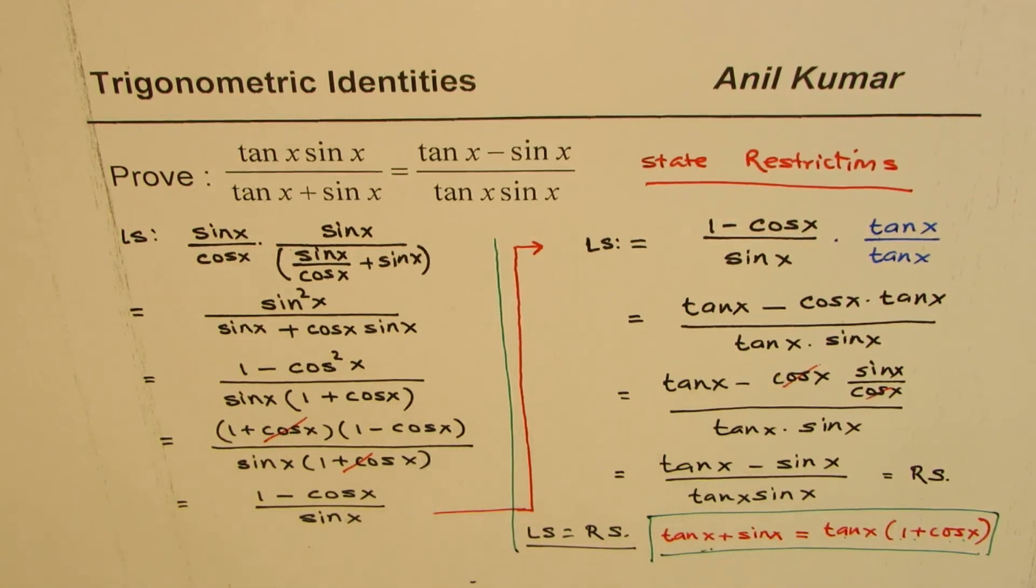That reduces a lot of work because if I replace tan x plus sin x by tan x times 1 plus cos x, then tan and tan cancel out and we get sin x over 1 plus cos x very fast. That helps to prove this identity in lesser number of steps. I'm Anil Kumar, and I hope with this you can explore and understand how to prove trigonometric identities. Feel free to post questions, share, and subscribe my videos. Thank you and all the best.